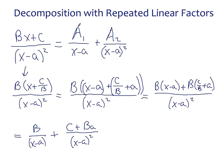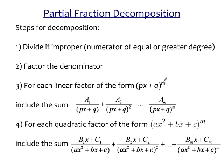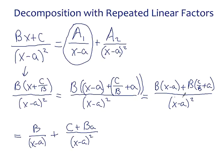By distributing b to each of the two groupings, we can create two separate fractions. The first term, b times (x minus a) over (x minus a) squared, allows cancellation of one factor of x minus a, giving b over x minus a. The second term gives (c plus b times a) over (x minus a) squared. Since c, b, and a are all constants, we've produced the form with a constant over x minus a and another constant over (x minus a) squared. This generalizes to higher powers and to quadratic factors as well. That's why this decomposition works.